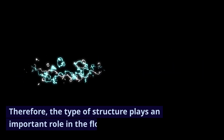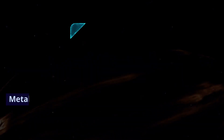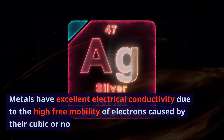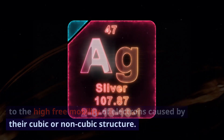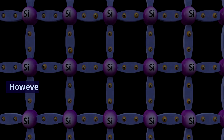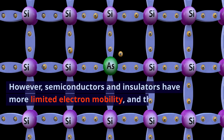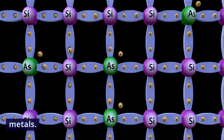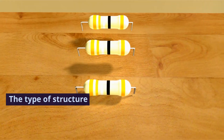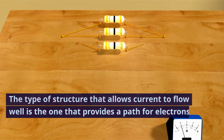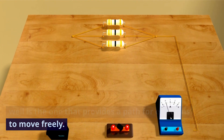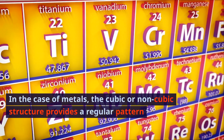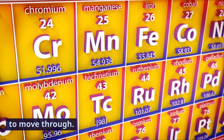Therefore, the type of structure plays an important role in the flow of current. Metals have excellent electrical conductivity due to the high free mobility of electrons caused by their cubic or non-cubic structure. The type of structure that allows current to flow well is the one that provides a path for electrons to move freely. In the case of metals, the cubic or non-cubic structure provides a regular pattern for electrons to move through.